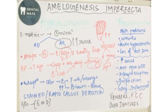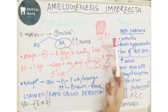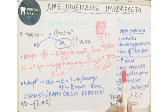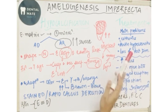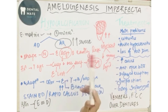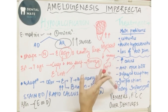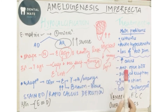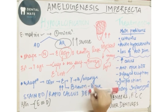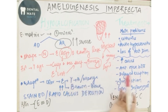Treatment of amelogenesis imperfecta is symptomatic — based on whatever symptoms are presented. The main problems are aesthetics, dentine hypersensitivity, and loss of vertical dimension due to improper tooth shape. Other issues seen in certain types include increased caries, anterior open bite, delayed eruption, impaction, and gingival inflammation.